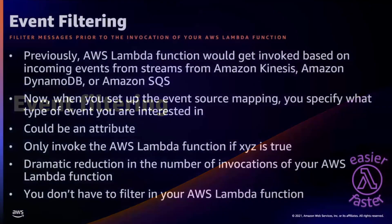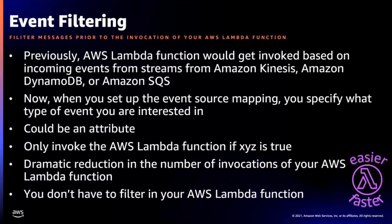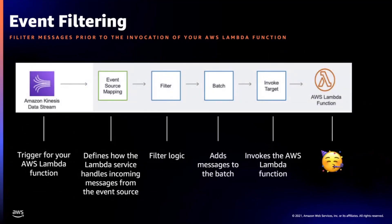Next, let's talk about event filtering. With Lambda event filtering, you can filter messages prior to the invocation of your Lambda function. Previously, your Lambda function would get invoked based on events from Kinesis, DynamoDB, or SQS, and then you would filter inside the function. Event filtering lets you specify, when setting up the event source mapping, exactly what type of event you're interested in — so the Lambda function only triggers when a certain condition is true.